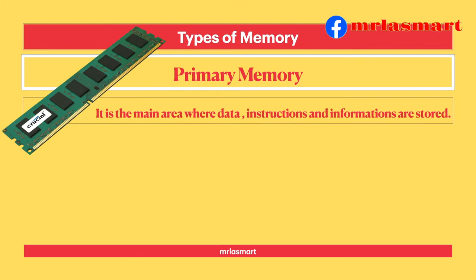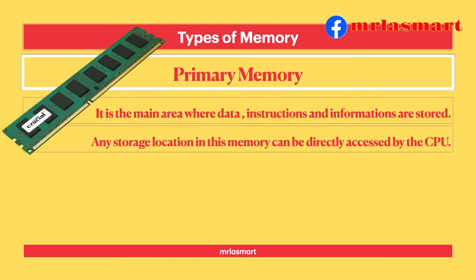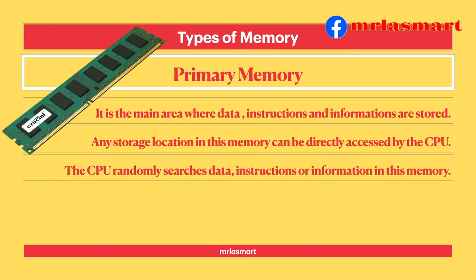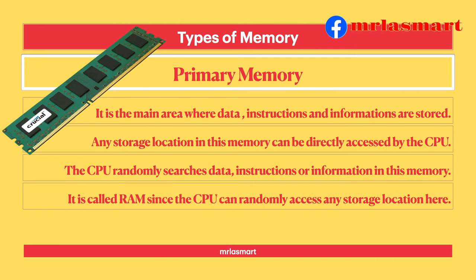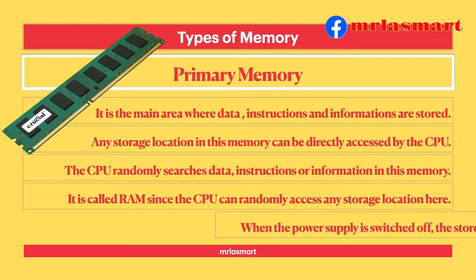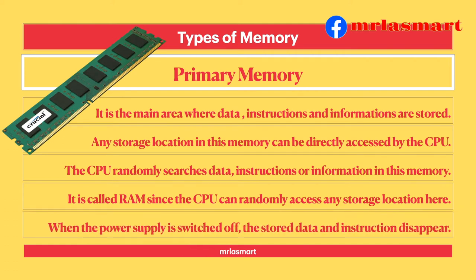It is the main area where data, instructions and information are stored. Any storage location in this memory can be directly accessed by the CPU. The CPU randomly searches data, instructions or information in this memory. It is called RAM since the CPU can randomly access any storage location here. When the power supply is switched off, the stored data and instructions disappear.